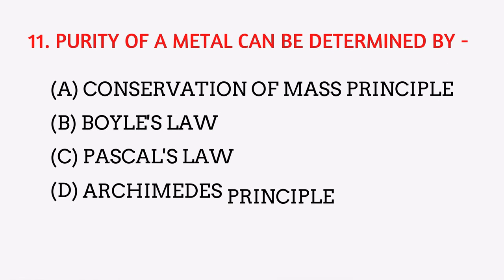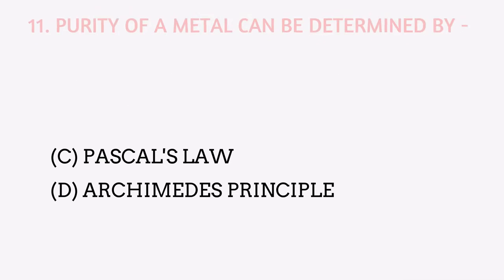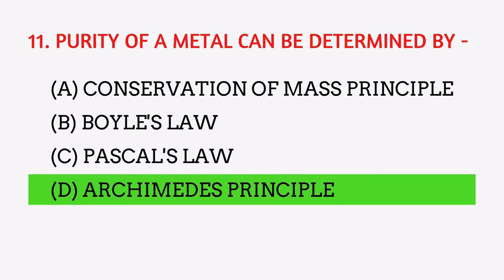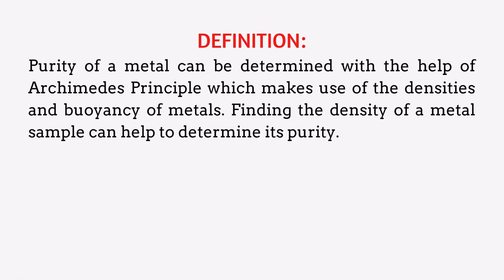The purity of a metal can be determined by what? The answer is Archimedes' principle. The purity of a metal can be determined with the help of Archimedes' principle, which makes use of the densities and buoyancy of a metal — finding the density of a metal sample can help determine its purity.